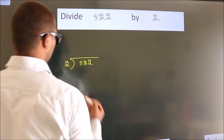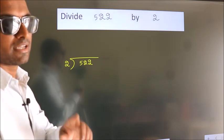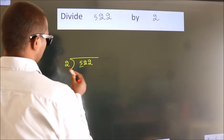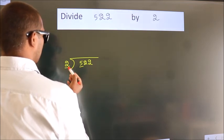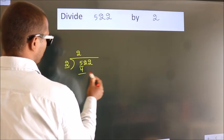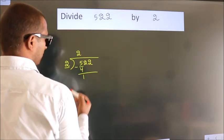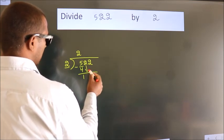2 here. This is your step 1. Next, here we have 5, here 2. A number close to 5 in 2 table is 2 times 2 equals 4. Now we should subtract, we get 1. After this, bring down the beside number.